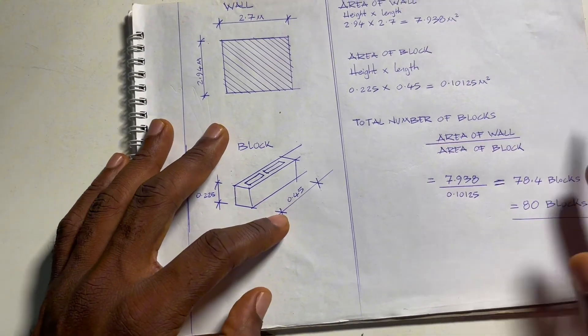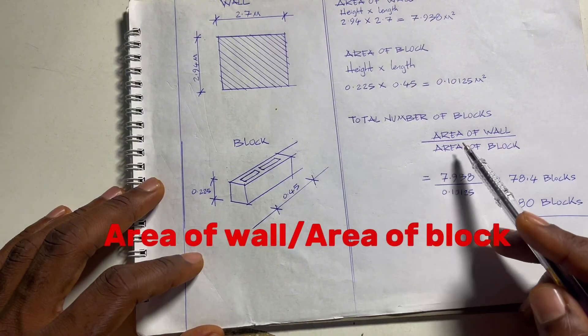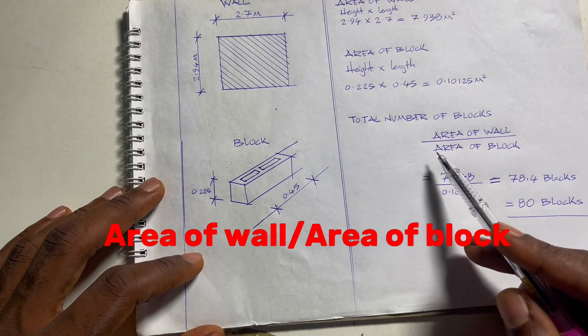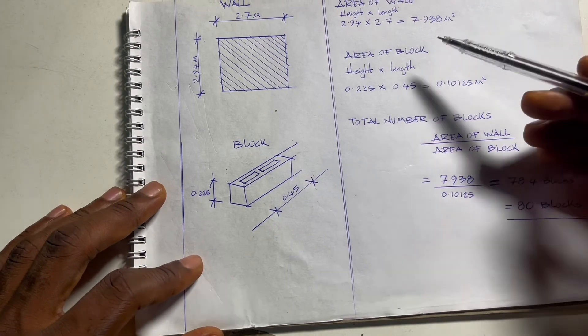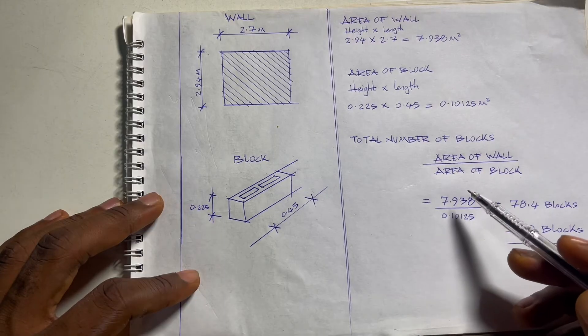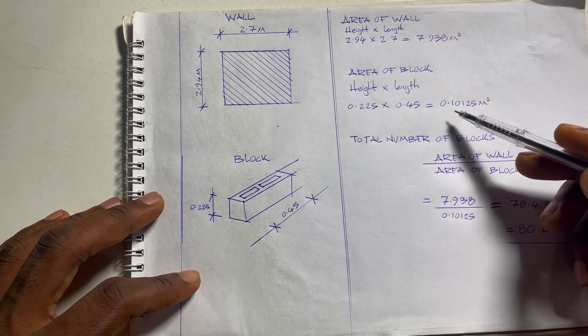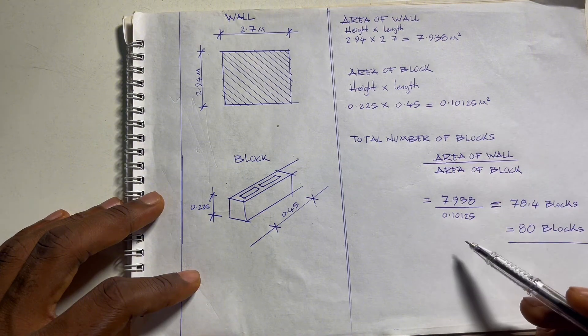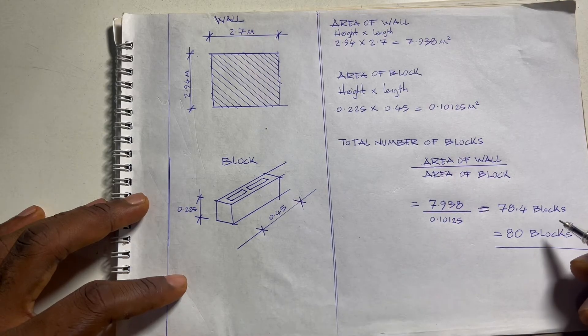Now to get the total number of blocks, we're going to do area of the wall divided by the area of the block. The area of the wall we got is 7.938 square meters divided by 0.10125 square meters. With that we get 78.4 blocks.